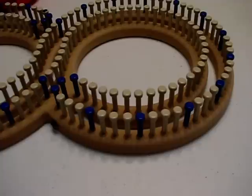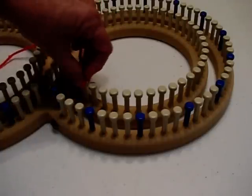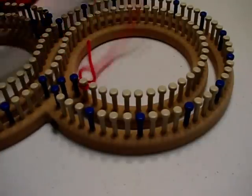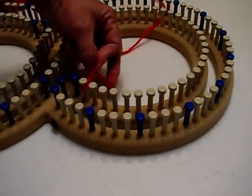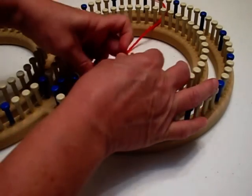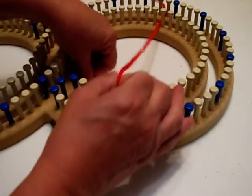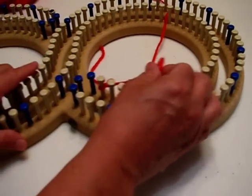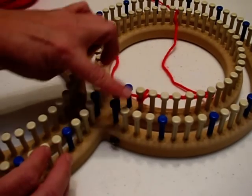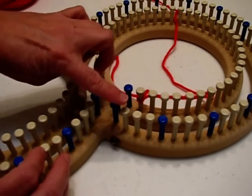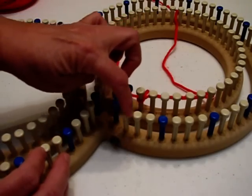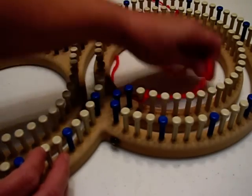The first step is to put your slip knot on your first peg. Now this basic stitch is the same as the E-wrap, but because we're working double panel, we're using the peg on the top and its corresponding peg at the bottom. So when we do an E-wrap around these, it looks a little like an 8.